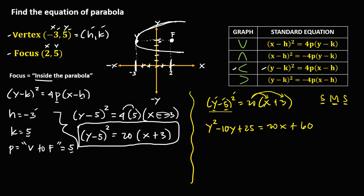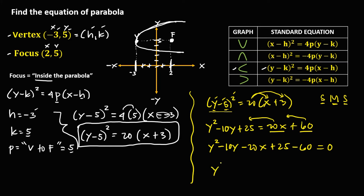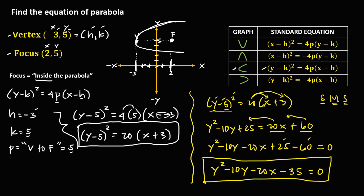Equating to zero by transposing everything to the left side: y² − 10y − 20x + 25 − 60 = 0, which gives y² − 10y − 20x − 35 = 0. This is the general equation of this parabola.